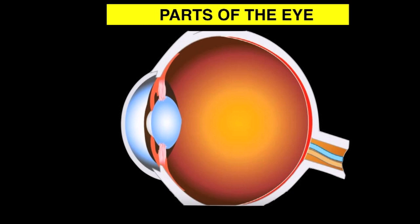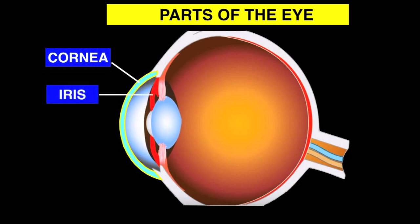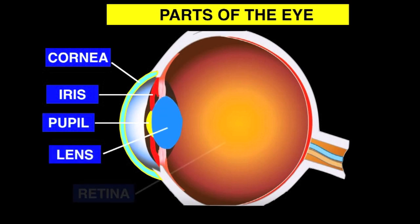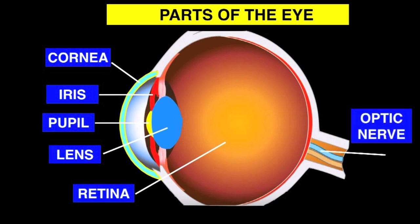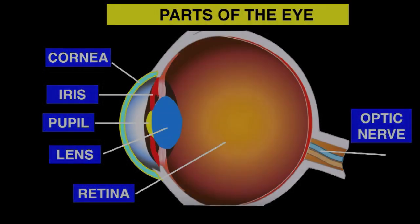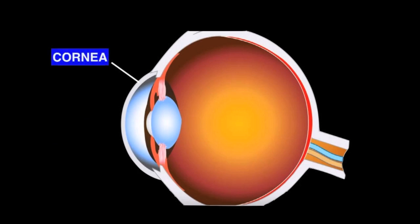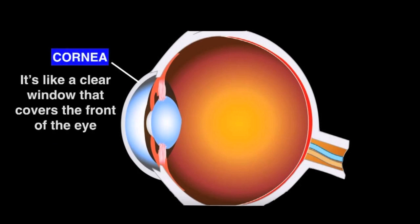The parts of the eye are the following: the cornea, the iris, the pupil, the lens, the retina, and the optic nerve. This part is called the cornea.